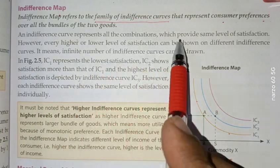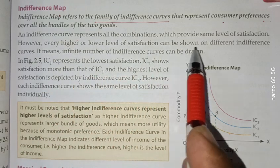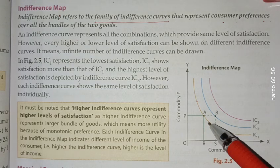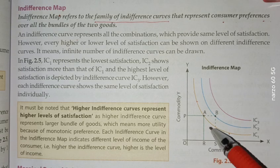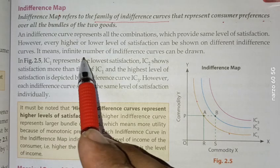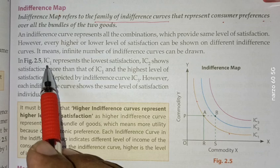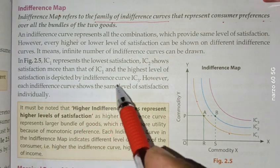An indifference curve represents all the combinations which provide the same level of satisfaction. However, every higher or lower level of satisfaction can be shown on a different indifference curve. This means that an infinite number of indifference curves can be drawn. IC1 represents the lower satisfaction, IC2 shows satisfaction more than IC1, and the highest level of satisfaction is depicted by indifference curve IC3.